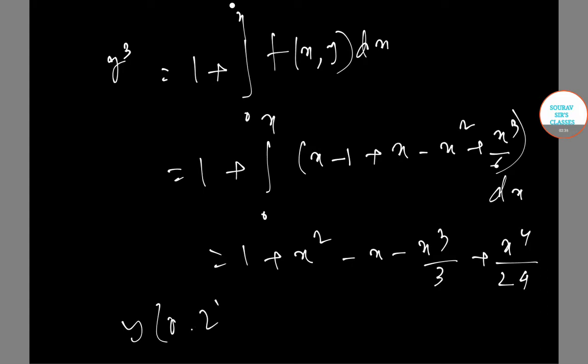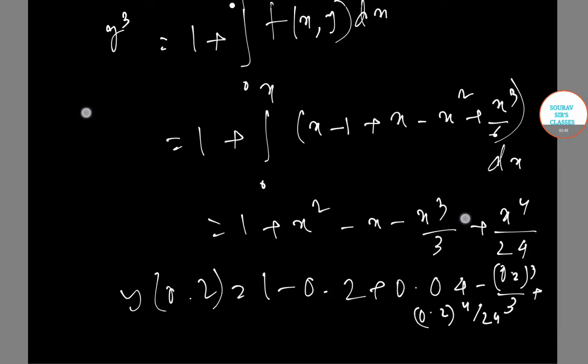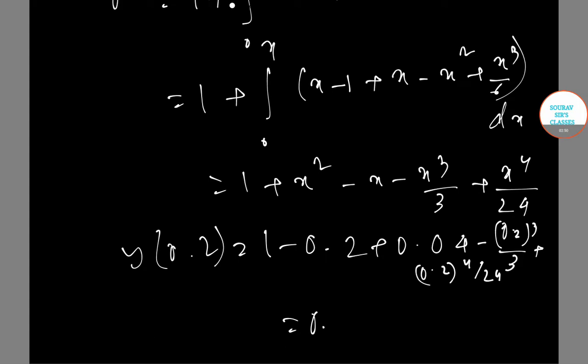y(0.2) = 1 - 0.2 + 0.04 - 0.2³/3 + 0.2²/24. This results into 0.83740.